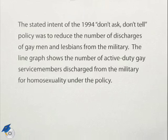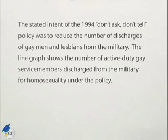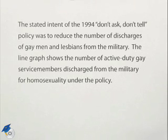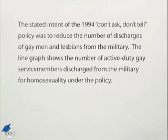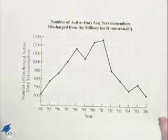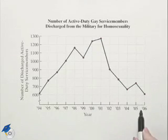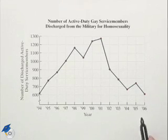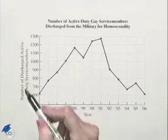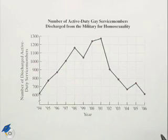Let's see how to read a graph and get values off of it. The stated intent of the 1994 Don't Ask, Don't Tell policy was to reduce the number of discharges of gay men and lesbians from the military. The line graph shows the number of active duty gay service members discharged from the military for homosexuality under the policy. We have the year along the bottom or the horizontal axis, and the number of discharged active duty service members along the vertical axis.